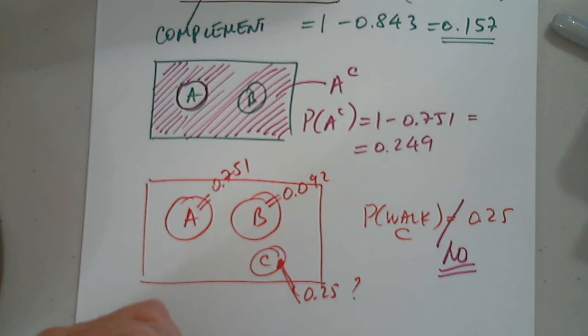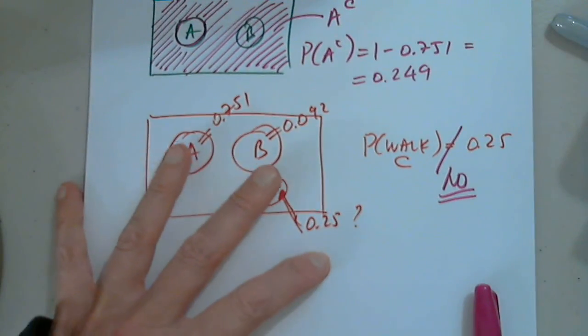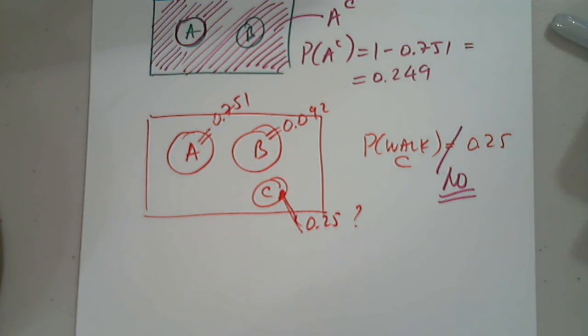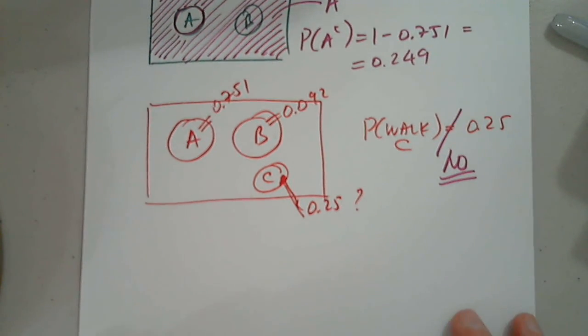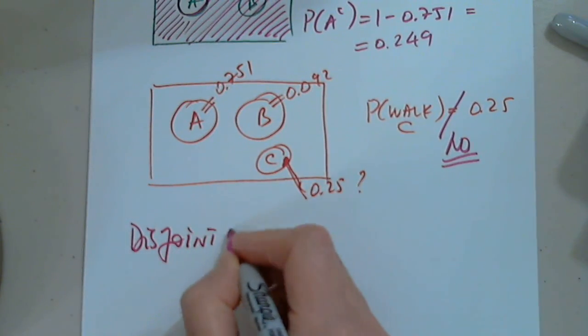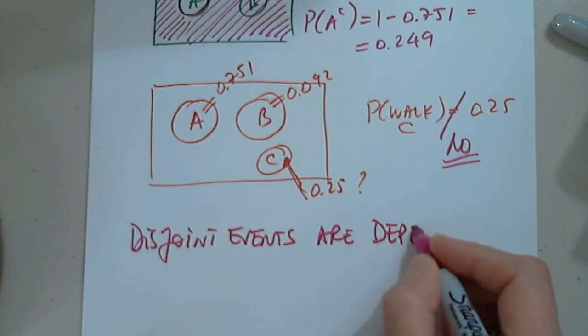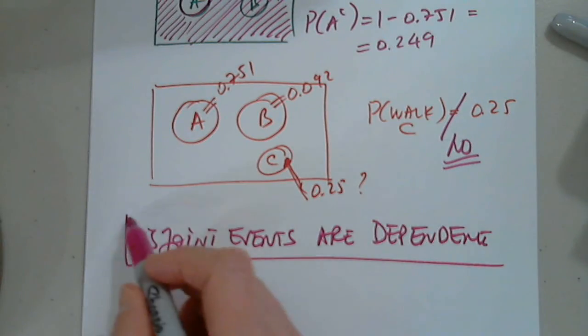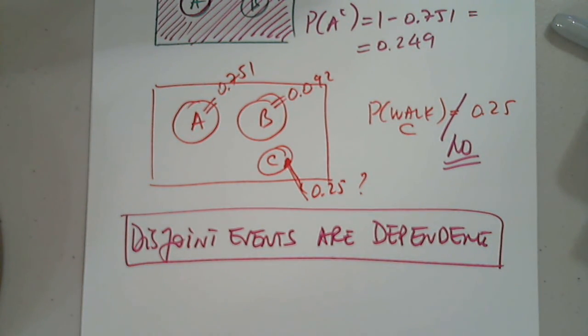Determine if the following statement is true or false. When two events are disjoint, they are also independent. If the events are disjoint, I'm going to write it down for you, they are dependent. So, if events are disjoint, they will automatically be dependent. So, let me share this. Stop sharing. So, disjoint events are dependent. Okay. So, let's go back and share. Here it is. When the two events are disjoint, they are also independent. No. What is the probability of obtaining 10 heads in a row when flipping a coin? Are the events independent or dependent?